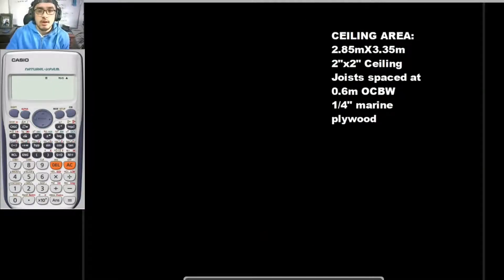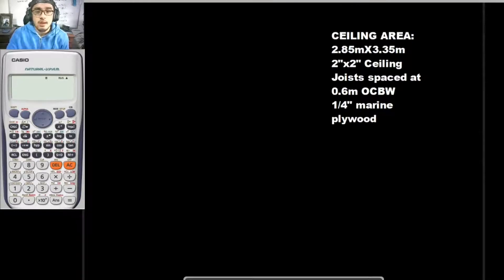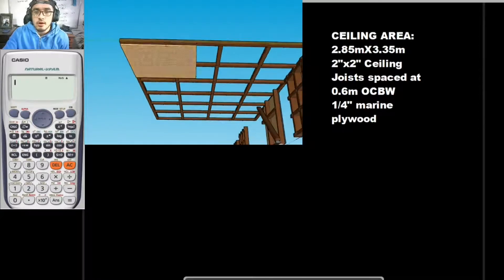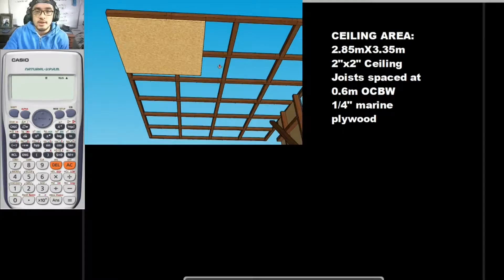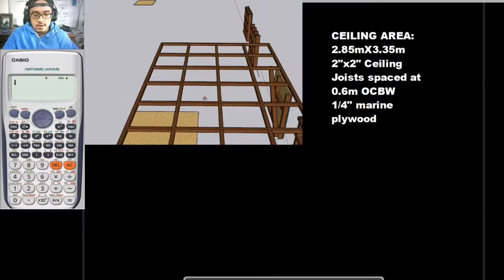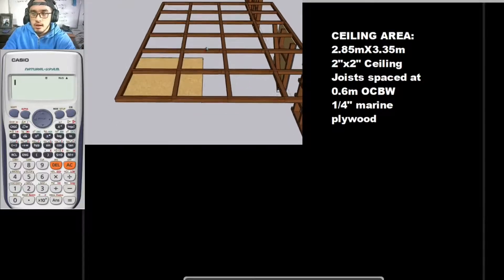Next up is ceiling works. For the estimation of materials for your ceiling, it is very similar to the procedure we did when we solved for the number of wall studs and for the number of plywoods in the interior walls. For your ceiling, your joists are spaced at a specific distance. In this problem, the ceiling joists are spaced at 0.6 meters on center, both ways.